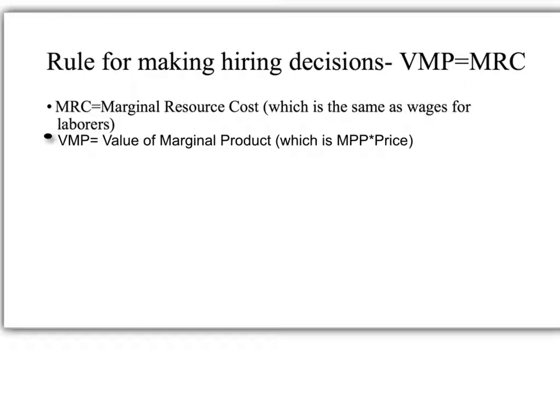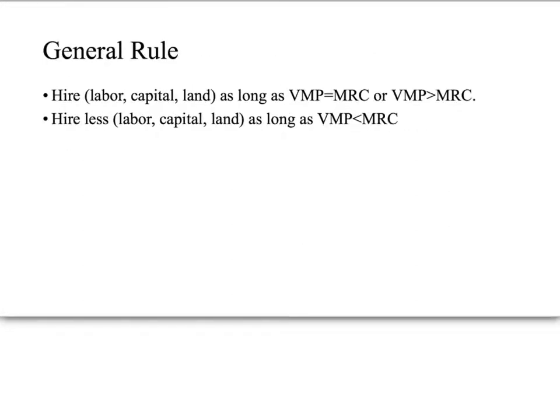MRC is marginal resource cost, which is the same thing as wages when we're talking about laborers. VMP is the value of marginal product, calculated as MPP times price. The general rule is: hire more when VMP is greater than or equal to MRC, and hire less labor, capital, or land when VMP is less than marginal resource cost.